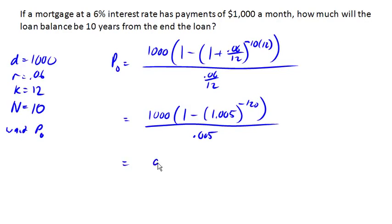We end up with $90,073.45. So this tells us that we could pay off a $90,000 loan with payments of $1,000 a month for 10 years. And so regardless of how much my loan started at, this is going to be the balance of my loan 10 years from the end of the loan if I can pay it off with $1,000 a month at that interest rate.